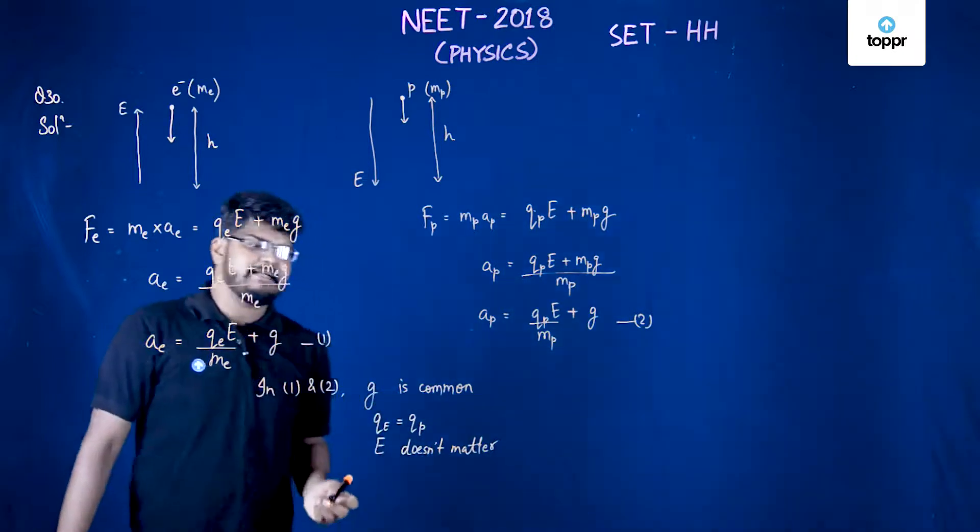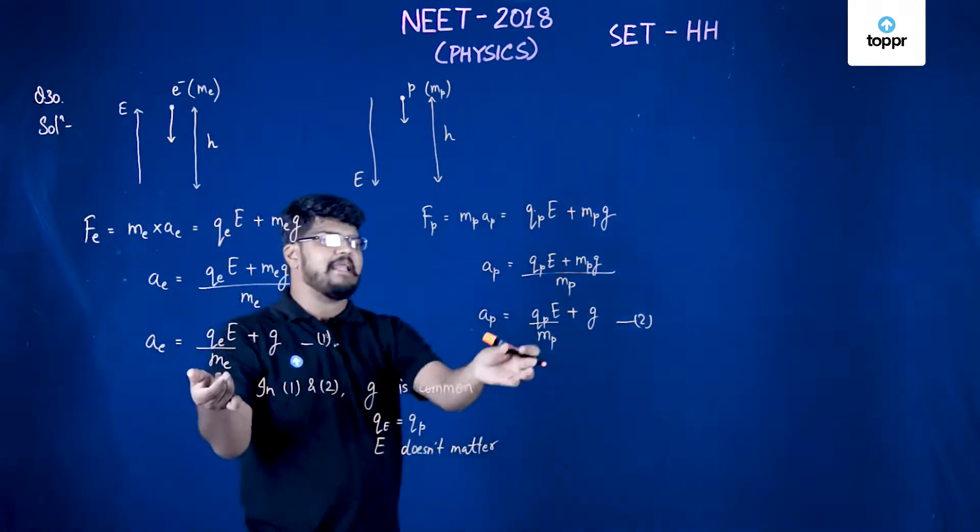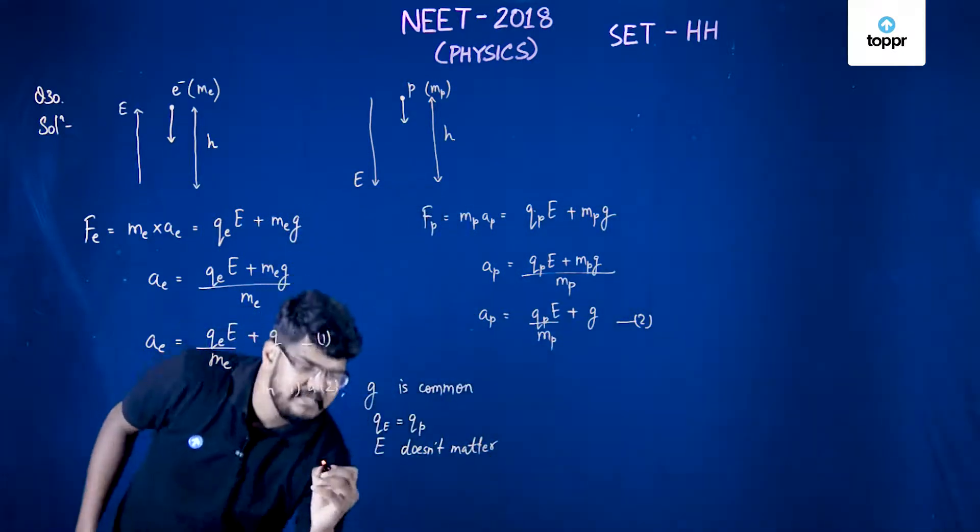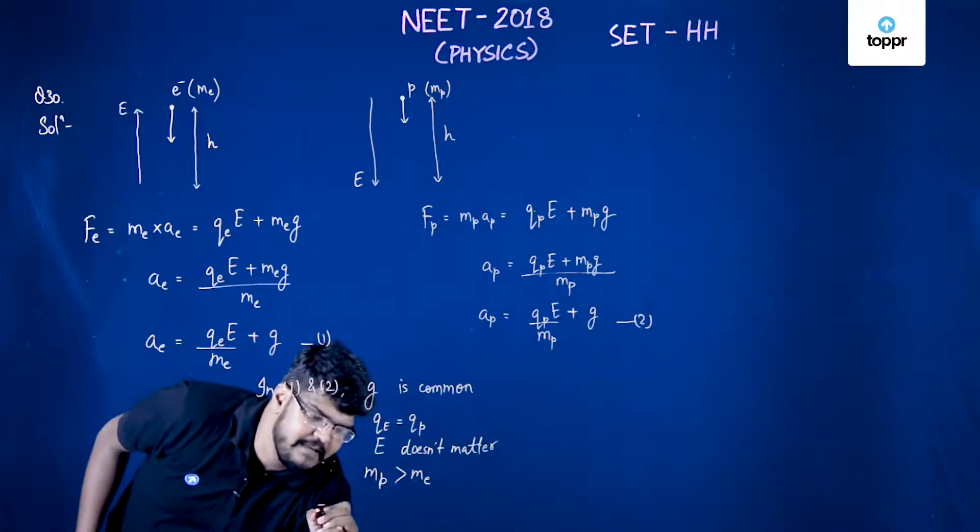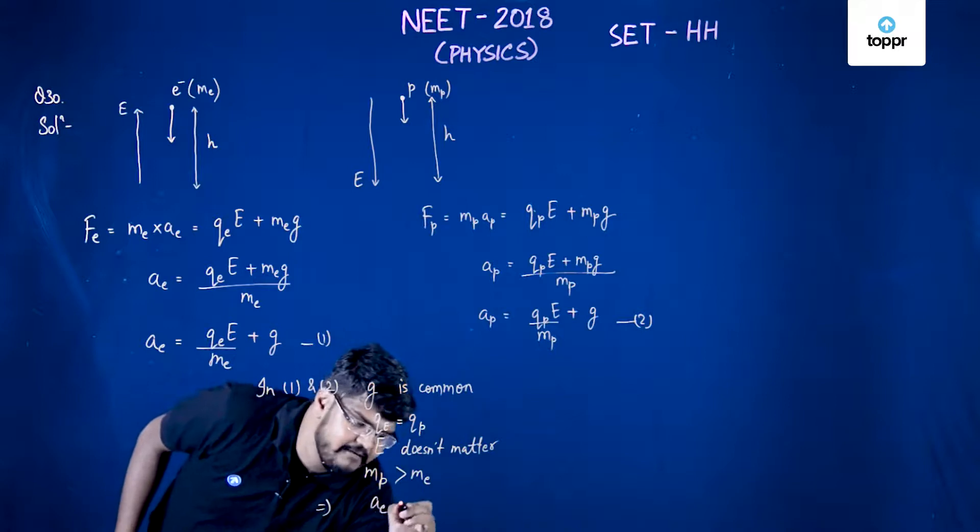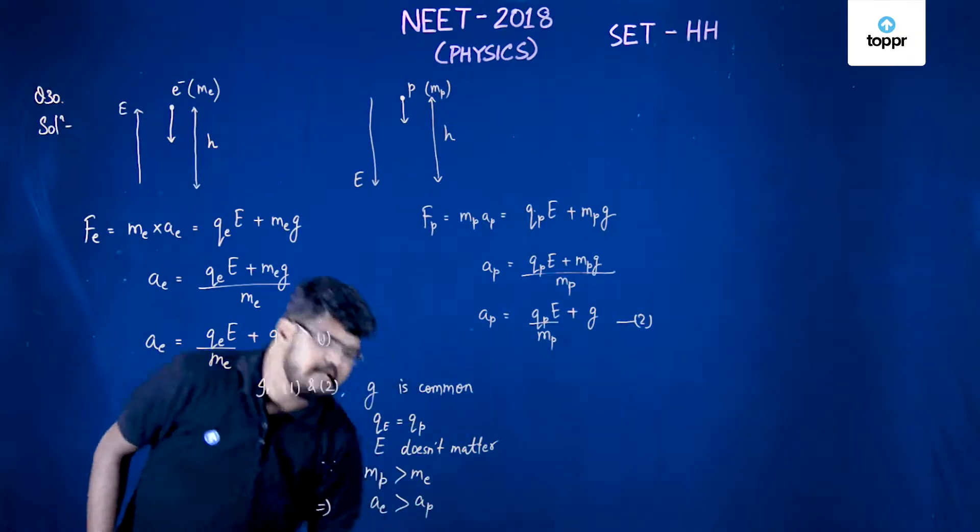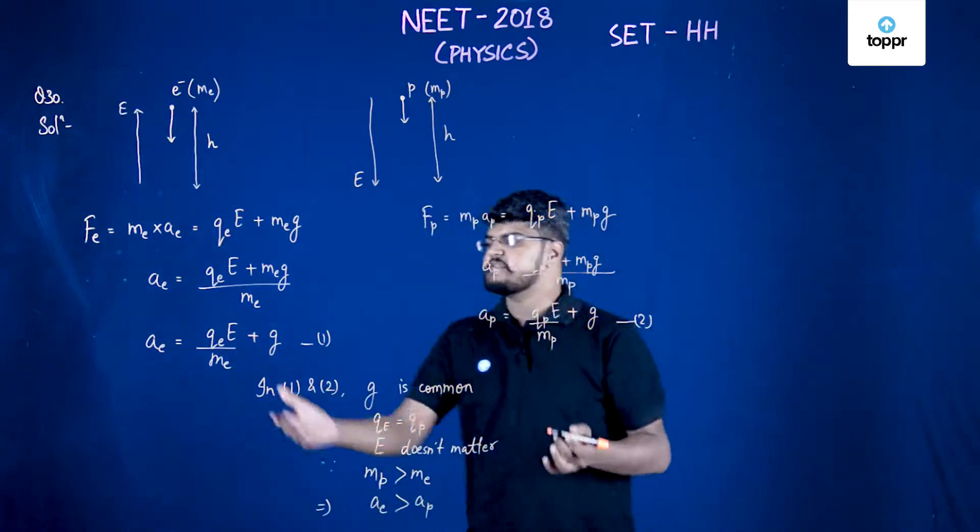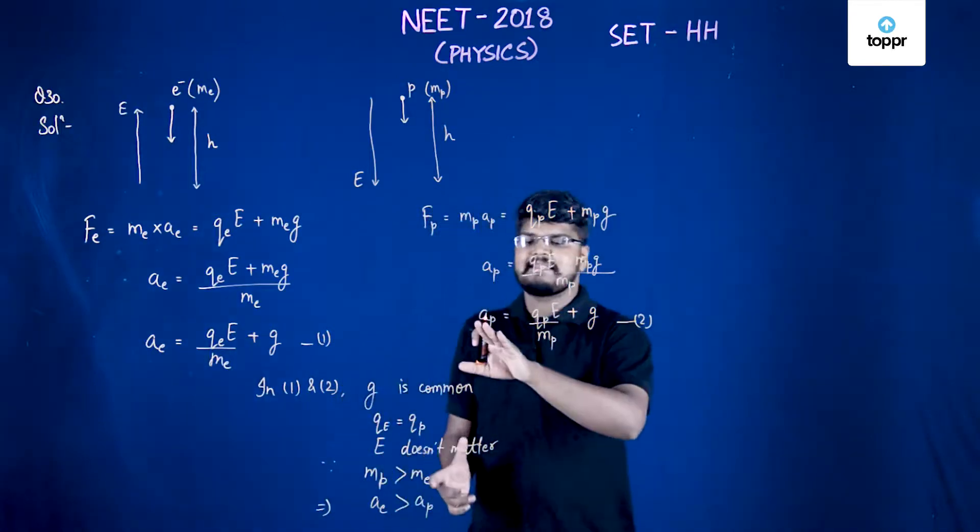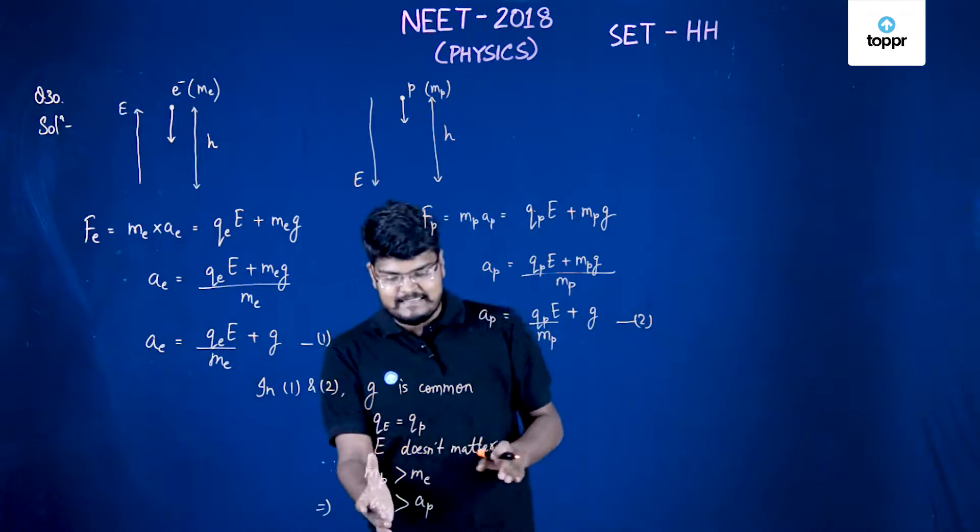The only quantity which is different here is ME and MP. Since MP is greater than ME, this implies that AE will actually be greater than AP. Because the mass of the proton is more than the mass of the electron, the acceleration of the proton will be less than the acceleration of the electron.